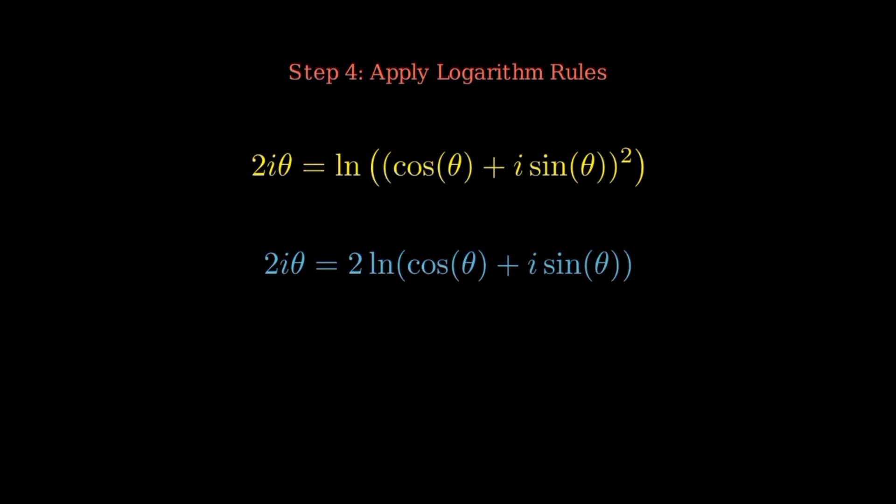Step 4. Use logarithm rules to simplify. Plug this back into the equation from step 2. 2i theta equals the natural log of cosine theta plus i sine theta all squared. Now use the logarithm rule: log of a to the power b equals b times log of a. That gives 2i theta equals 2 times the natural log of cosine theta plus i sine theta. Divide both sides by 2. We get i theta equals the natural log of cosine theta plus i sine theta.